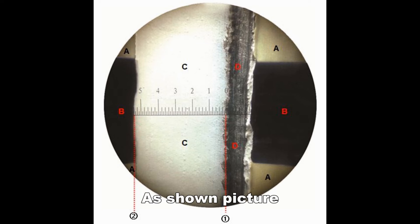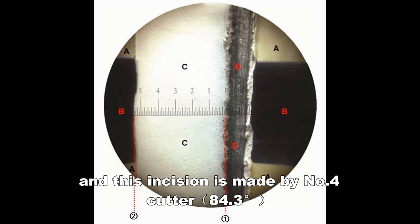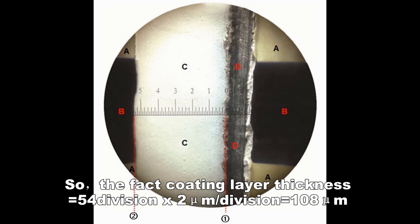As shown in the picture, the distance from line 1 to line 2 is 54 small divisions. This incision is made by number 4 cutter at 84.3 degrees. So the actual coating layer thickness equals 54 divisions × 2 μm/division = 108 μm.